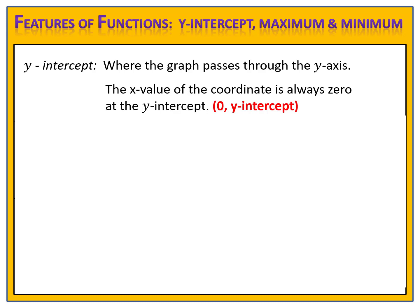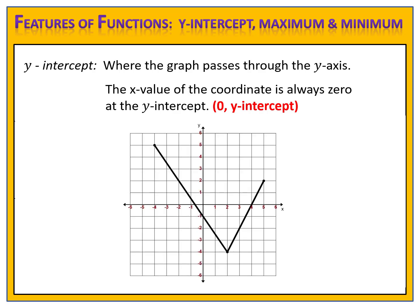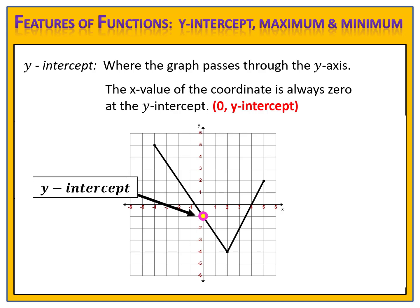Let's take a look at an example. Here we have the graph of a function, and here we have the y-axis. Notice where that function passes through the y-axis — it's at this point right here. That point is known as the y-intercept. The coordinates of that point are zero, negative one. Notice that the x value is zero. That's always true for the y-intercept.